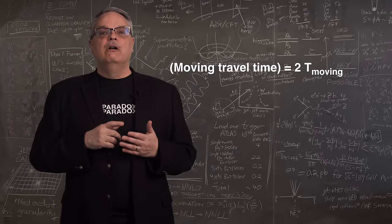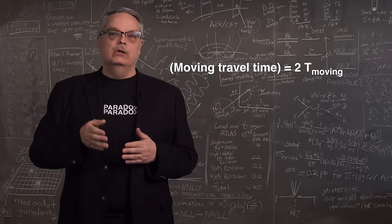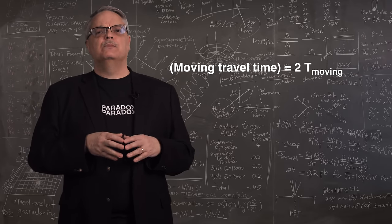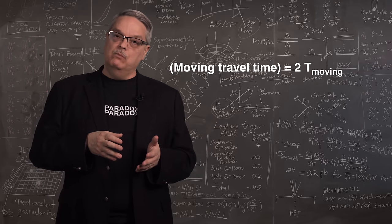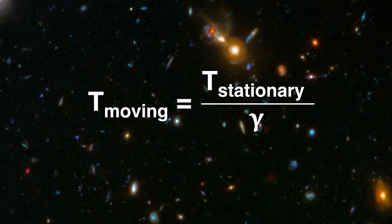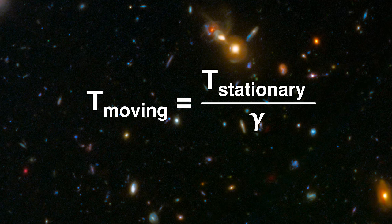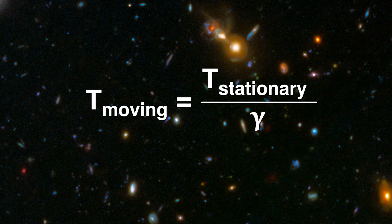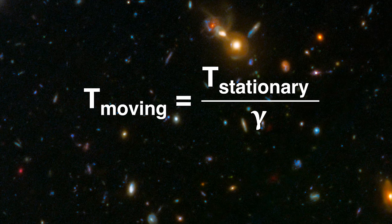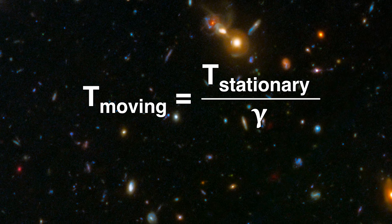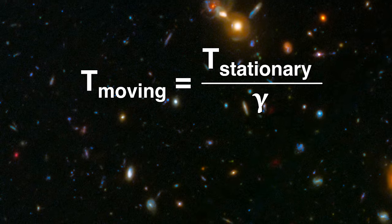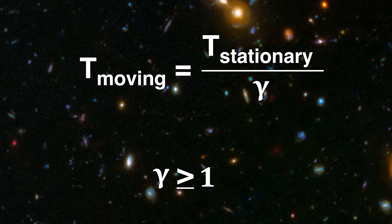So the travel time for B to head outward and C to return is simply 2 times T moving. How do the times experienced by the earthbound A and moving B and C compare? Well, you can use the equations of relativity to calculate this and I did it in the other video. But here I'll just tell you the answer. T moving is equal to T stationary divided by Gamma. Gamma is a term that shows up everywhere in relativity and it's related to the relative velocity between two observers. It's always greater than or equal to 1.